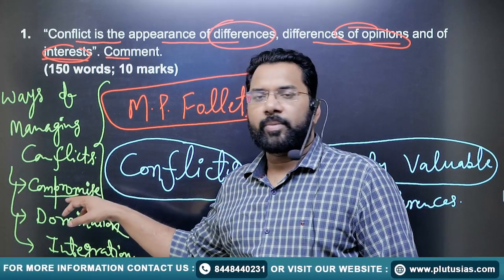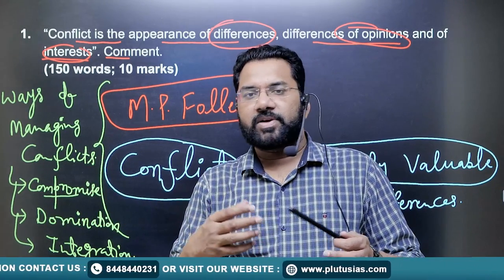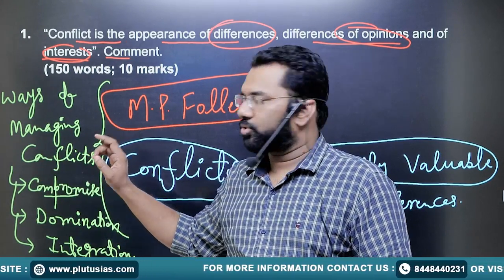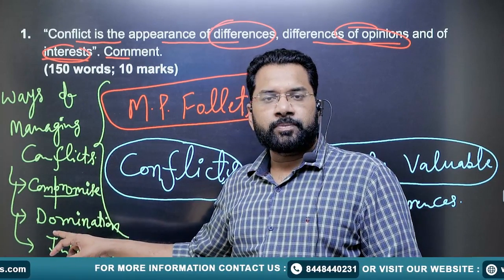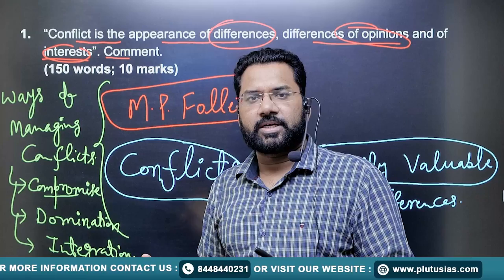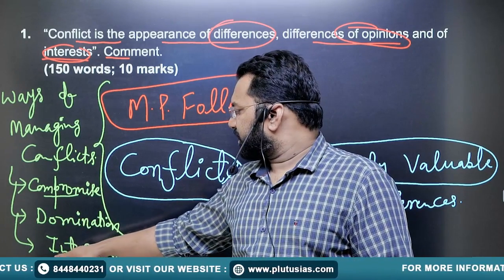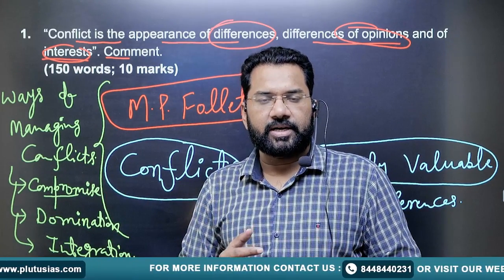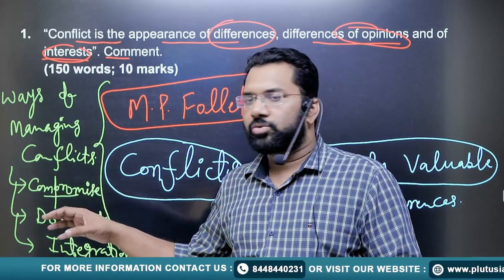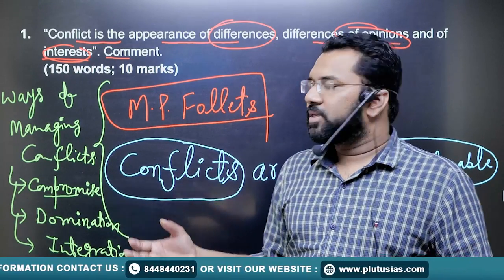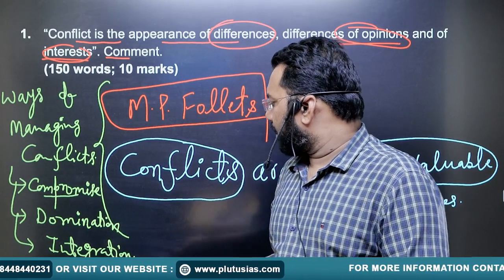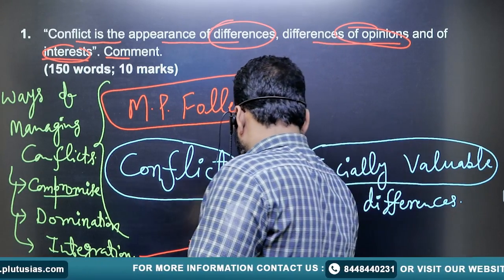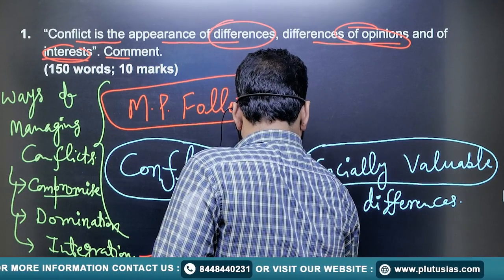In case of compromise, both the parties will give up a little bit and come to a conclusion — that way resolution is provided. Under domination, one set of views will be dominating over the others. Under integration, no one's views are being suppressed; every view is taken into consideration, and based on both parties' views, some new solutions are provided. According to Follett, integration is the best strategy to solve the conflict.